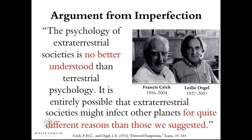These two scientists were considering whether aliens would try to seed other planets with life, and they wrote back in 1973 in the article 'Directed Panspermia' that the psychology of extraterrestrial societies is no better understood than terrestrial psychology. It is entirely possible that extraterrestrial societies may infect other planets for quite different reasons than those we suggested. So what these two scientists have correctly concluded here is that design could be detected in the absence of information about the designer's motives.